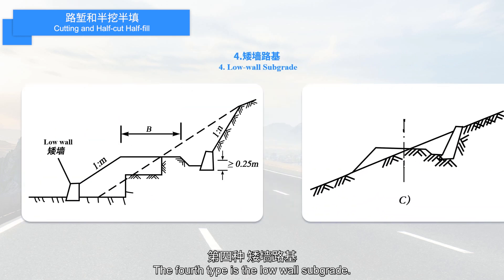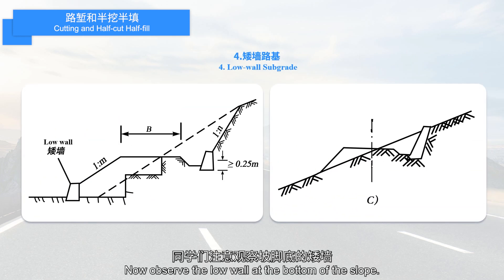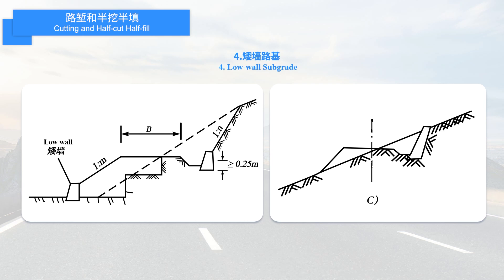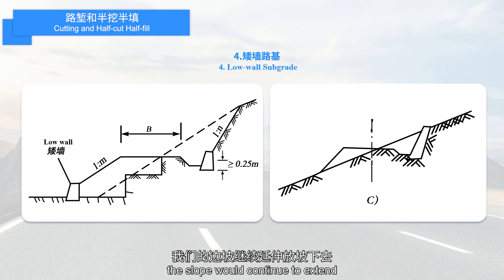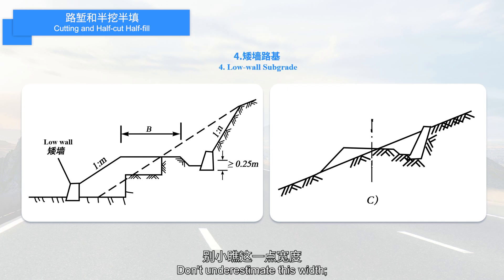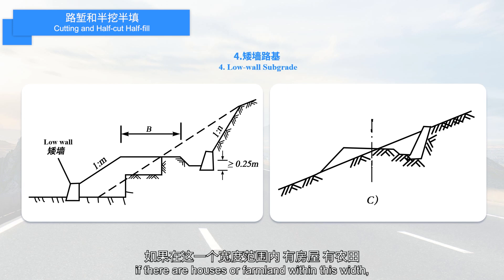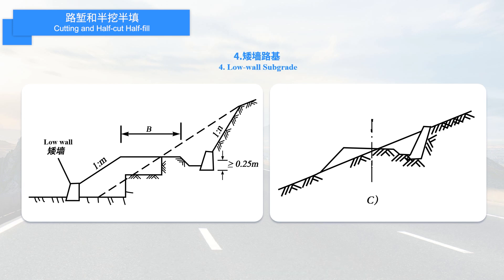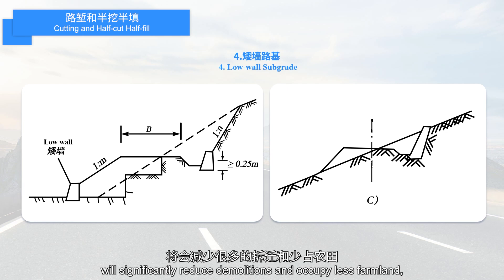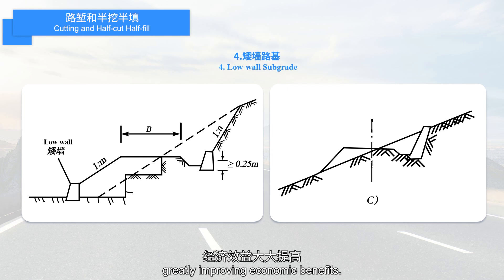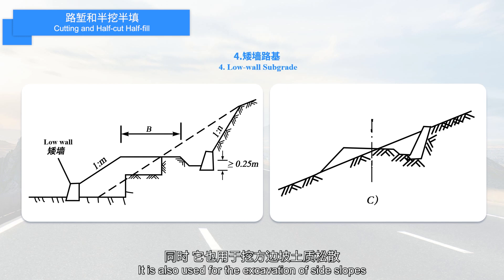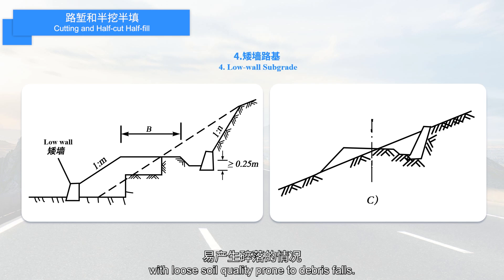The fourth type is the low wall subgrade. Observe the low wall at the bottom of the slope — what is its function? Without it, the slope would continue to extend and occupy a wider area. Don't underestimate this width. If there are houses or farmland within this width, setting up this low wall will significantly reduce demolitions and occupy less farmland, greatly improving economic benefits. It is also used for the excavation of side slopes with loose soil quality prone to debris falls.